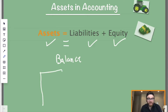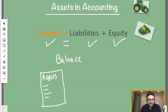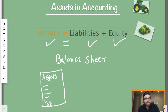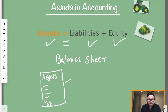Assets go on your balance sheet — they're the first thing that appears on it. There's a lot of stuff under assets, and then down below you'll have your liabilities, and then below that your stockholders' equity. This is called a balance sheet, and that's an important part of knowing what assets are, because assets must equal liabilities plus equity.